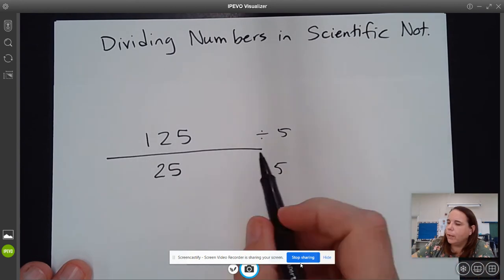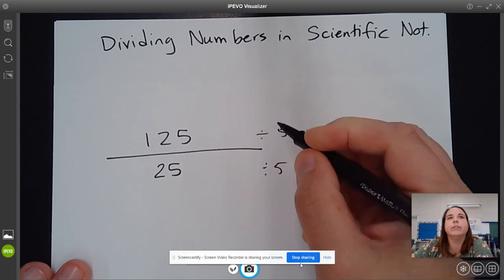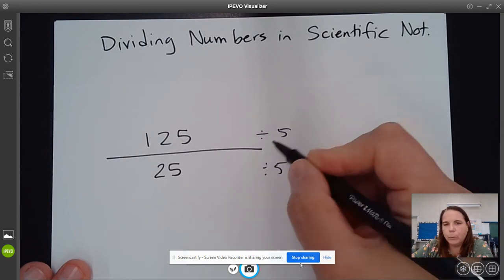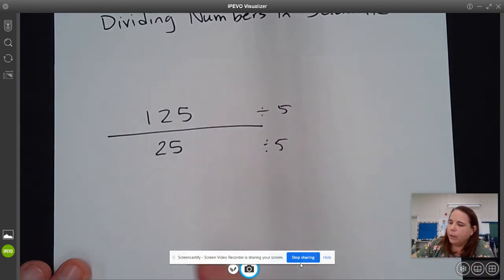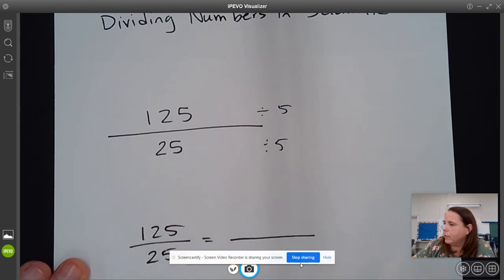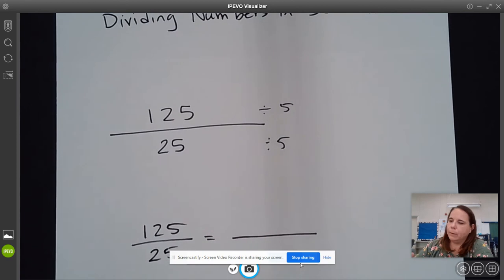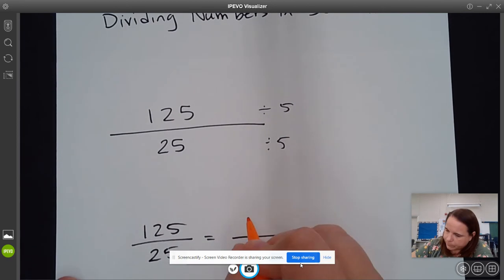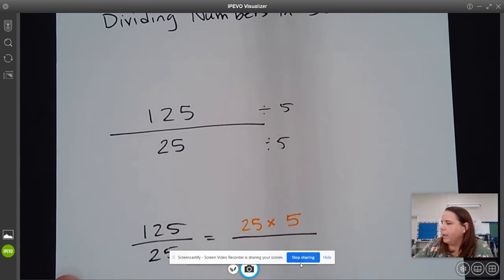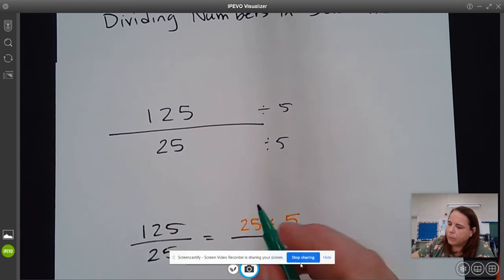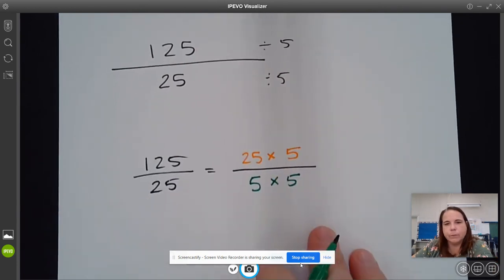So what we're really actually doing here when we simplify a number this way is we are thinking of 125 over 25 as two factors. So this is 25 times 5, and 25 is the same thing as 5 times 5.